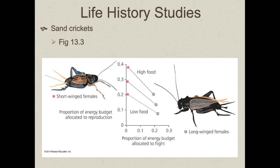Short-wing females are stuck where they're born; they can't move to a different habitat if there's a food failure. Long-wing females, raised in a variable environment where resources are seasonally unpredictable, can escape poor local micro-habitats and achieve some reproductive success. In a highly variable population, some years the short-wing females do better; other years they have absolutely no reproductive success and the long-wing females do better. So both life history strategies can coexist in the population.